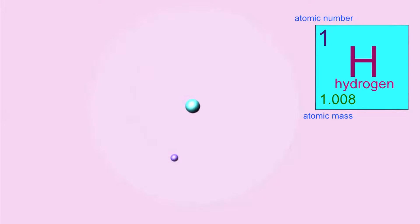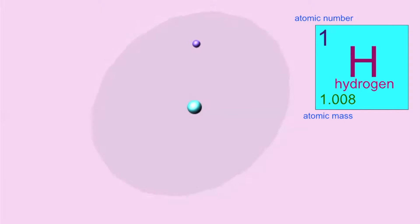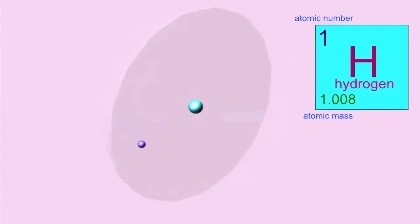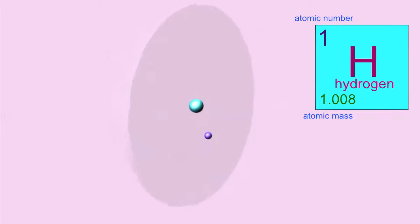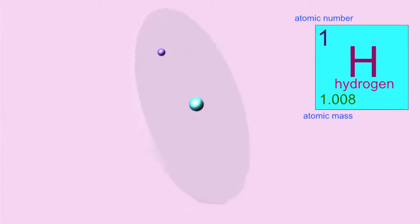The atomic mass is slightly more than 1 — 1.008 — because there are rare isotopes of hydrogen which do possess one neutron or even two, but the overwhelming majority of hydrogen atoms possess only a proton in the nucleus.